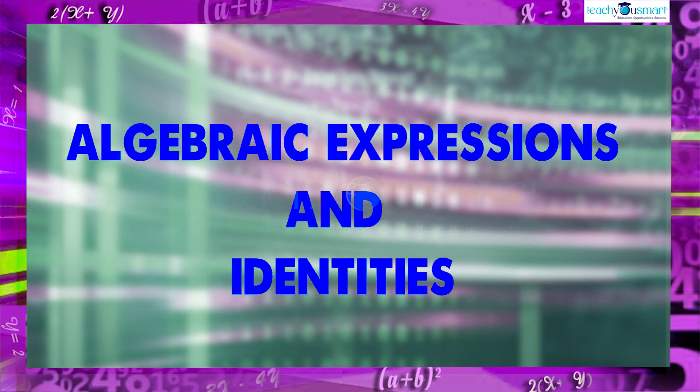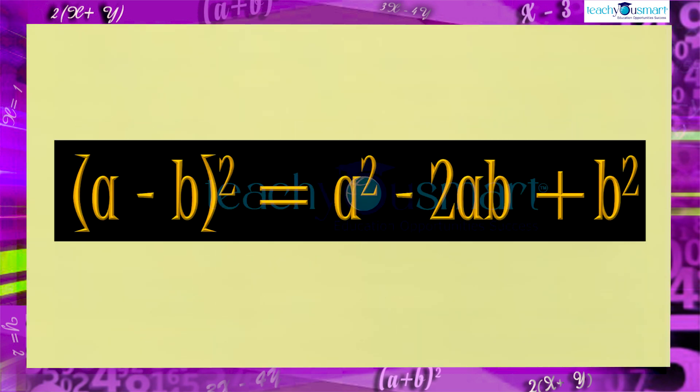Today we are going to explain another identity: a minus b, the whole square, equals a square minus 2ab plus b square.